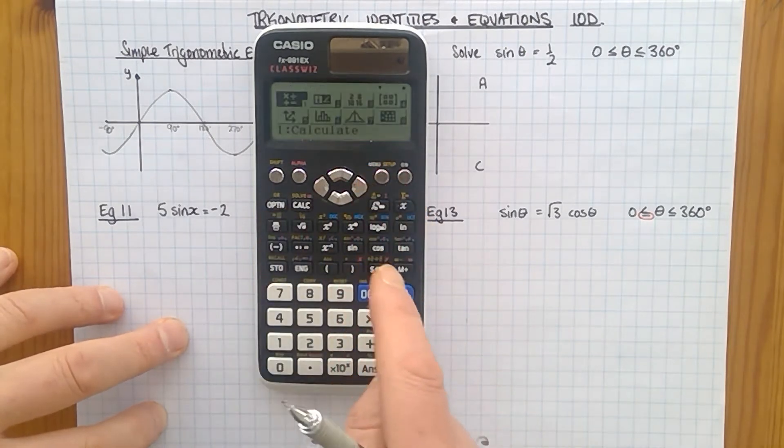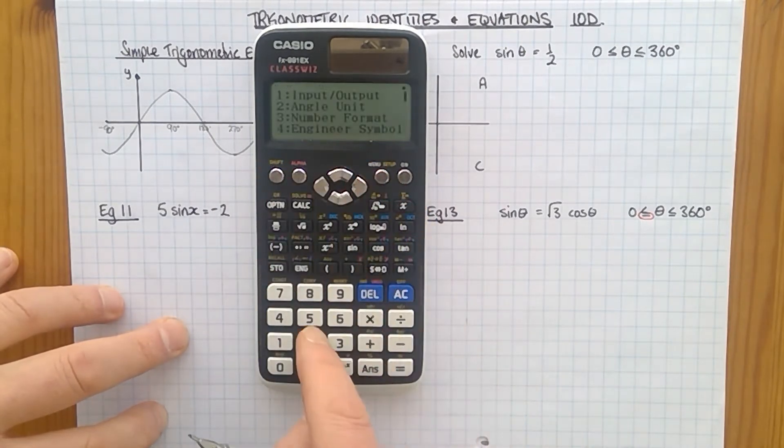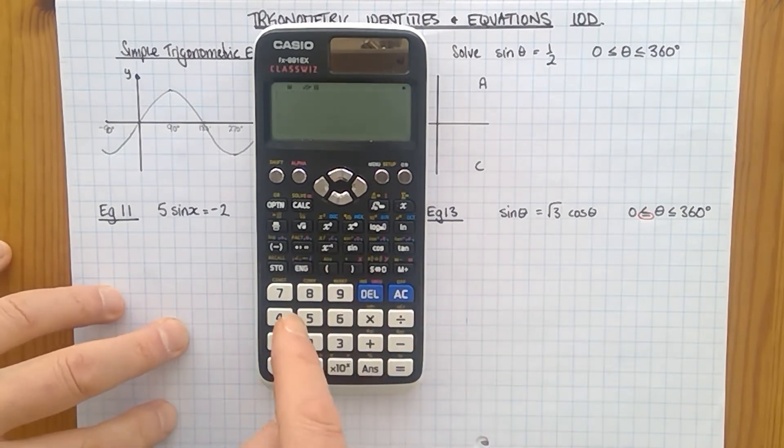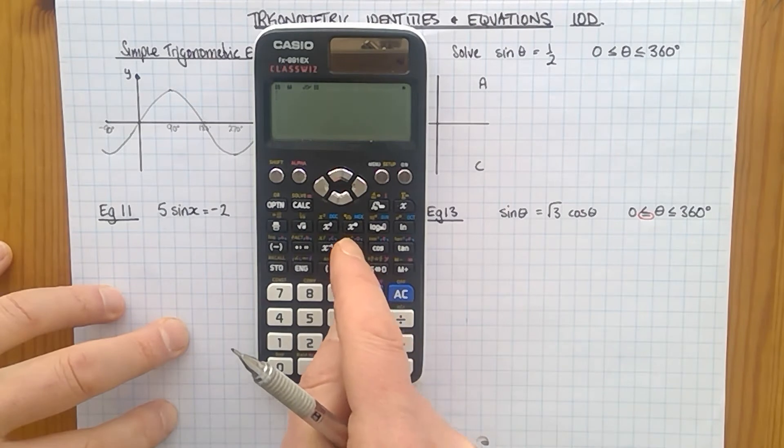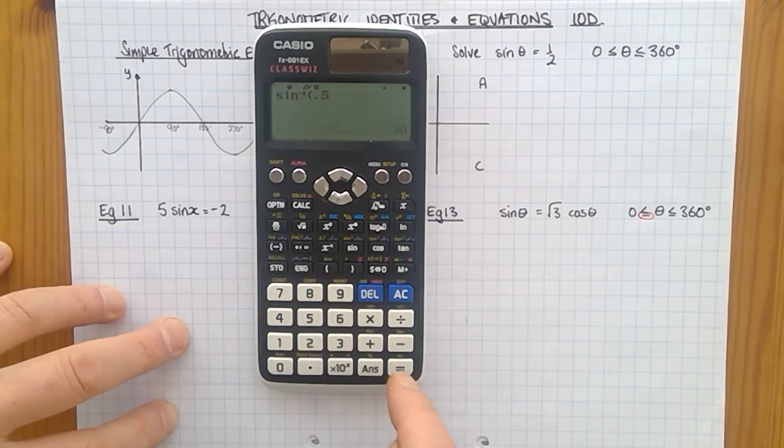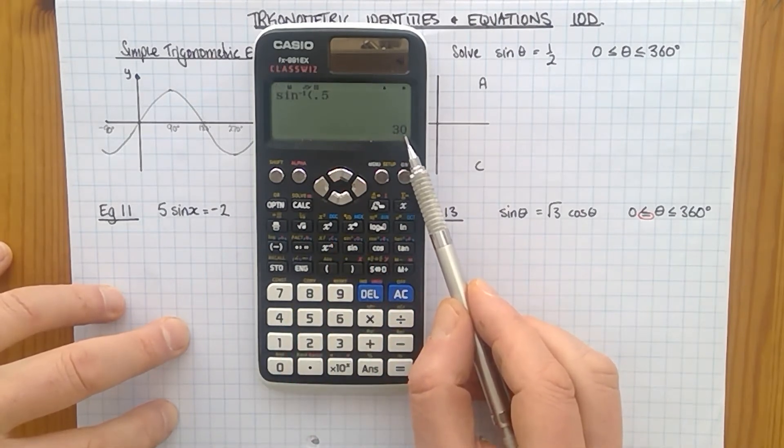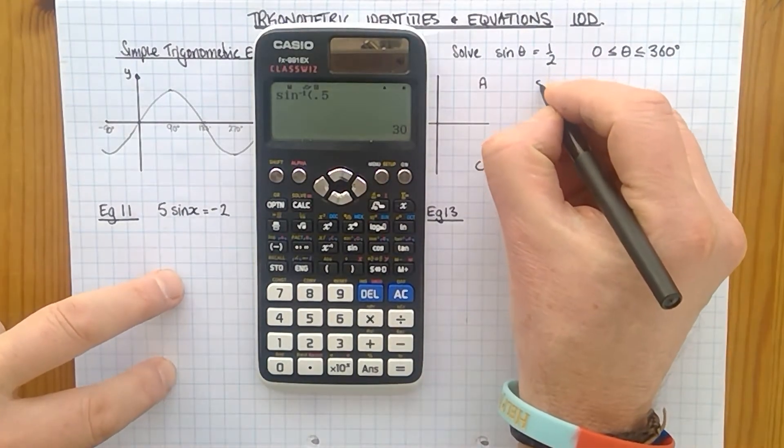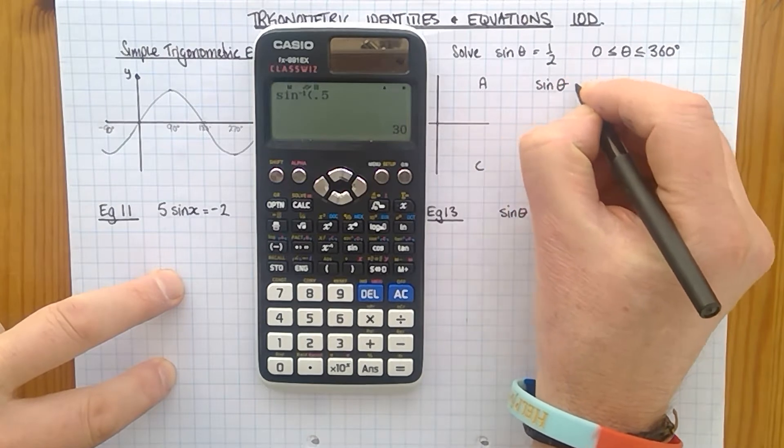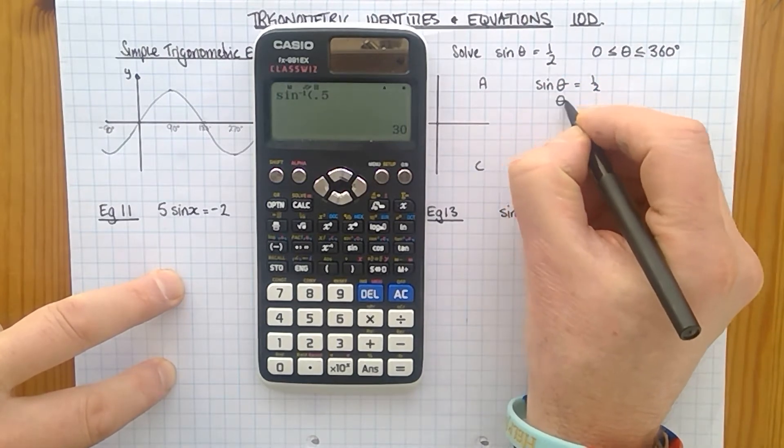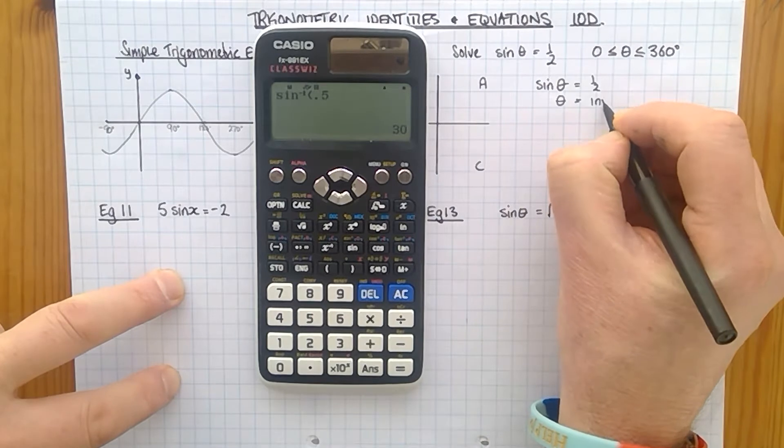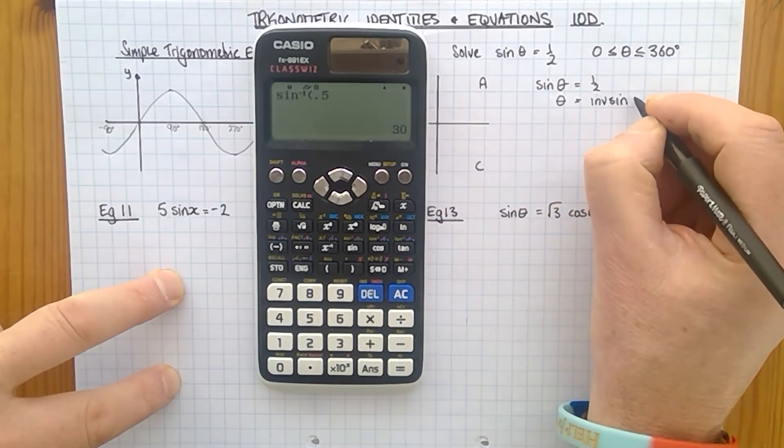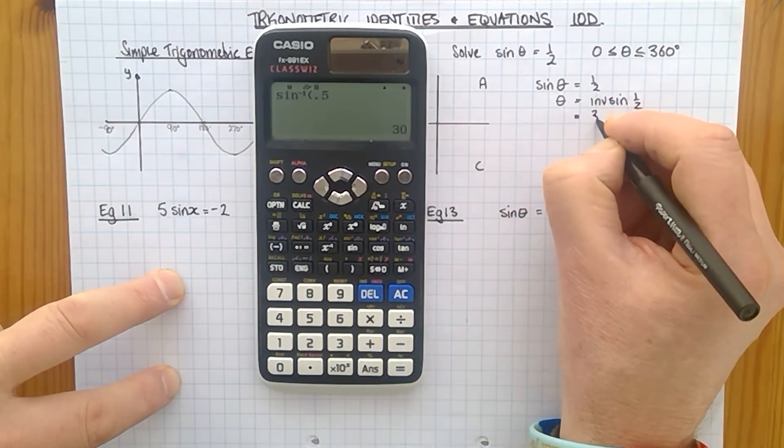I'm in radians. I really don't want to be in radians. More of that in year 13, I think. We're going to have degrees. So shift sine 0.5. You see your calculator just gives you one answer. So sine theta is a half and theta is inverse sine of a half, which is 30.